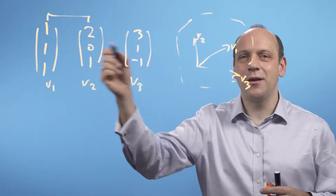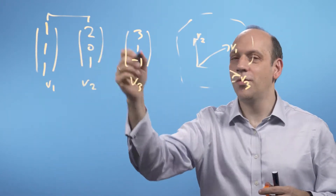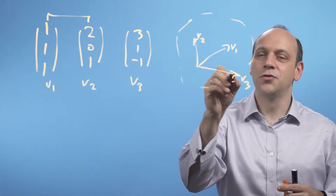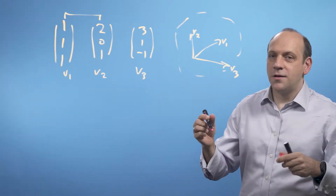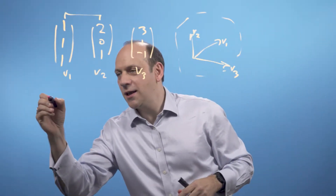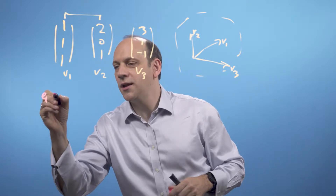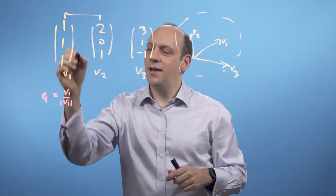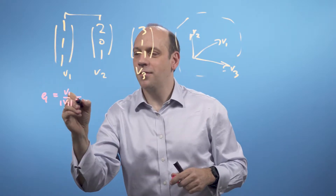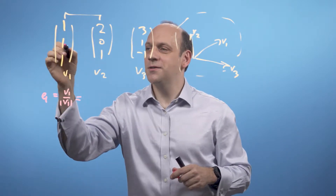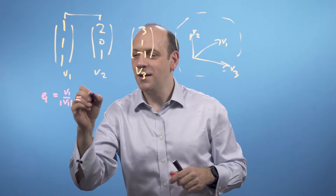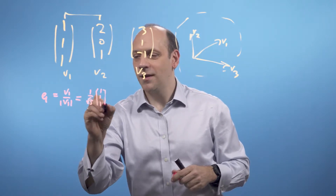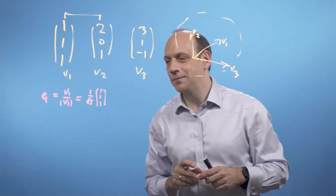First, let's do the Gram-Schmidt process and find some orthonormal vectors describing this plane and its normal v3. My first vector e1 is going to be just the normalized version of v1. v1 is of length root 3 — 1 squared plus 1 squared plus 1 squared, all square rooted. So e1 = (1/√3)(1, 1, 1). That's a normalized version of v1.